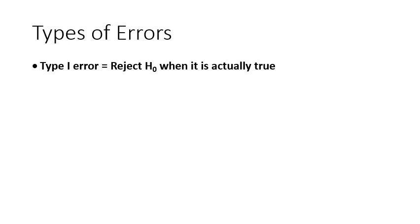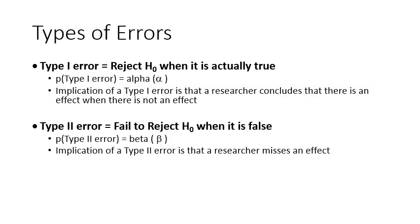Type one error is when we reject H₀ but it's actually true — this is where we conclude there's an effect but there's no effect. Type two error, beta, is when we conclude there is no effect when there actually is an effect. Type one error is way worse than type two error.